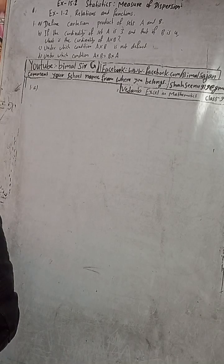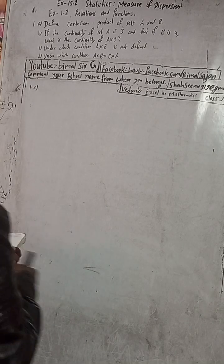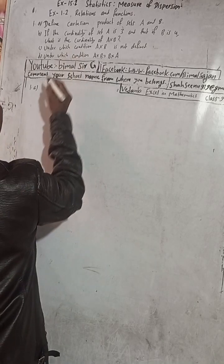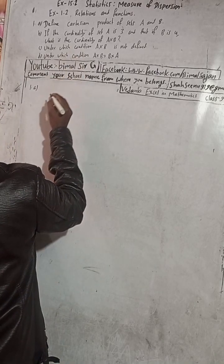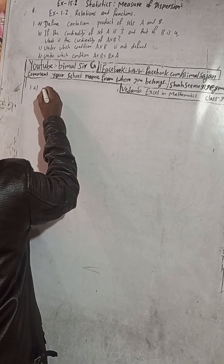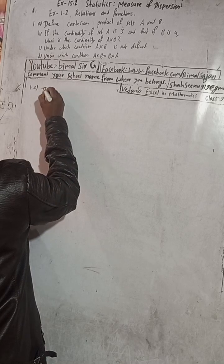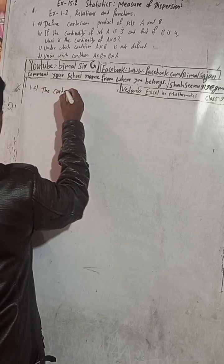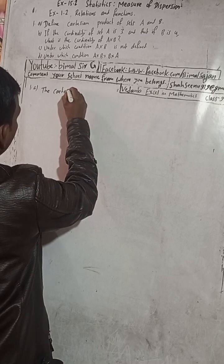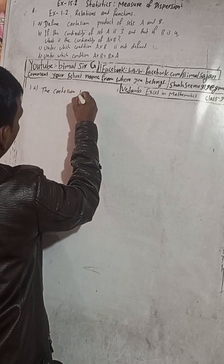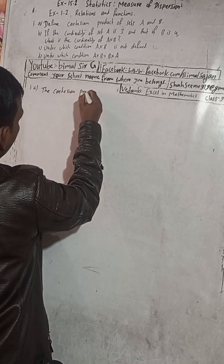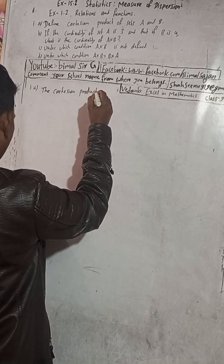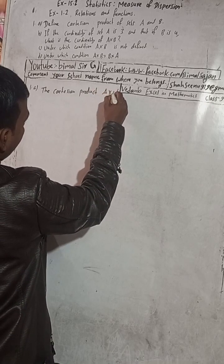So here the definition of Cartesian product we can write. Number 1: the Cartesian product is the set A×B.